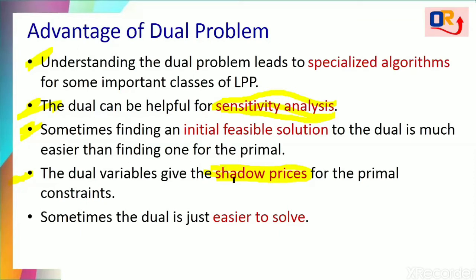Dual variables give the shadow prices for the primal constraints. The last point is that sometimes it is easier to solve the dual problem. A primal with many constraints and few variables can be converted into a dual with few constraints and many variables. By solving the dual we can get the solution for the original problem — primal and dual are related, so solving one gives the solution of the other.